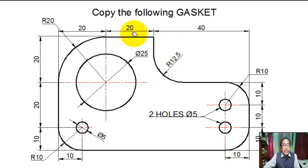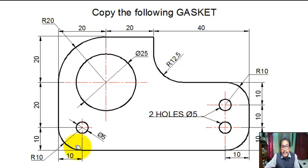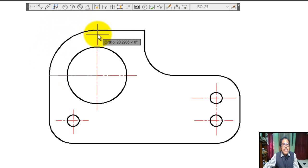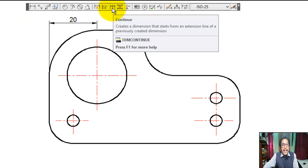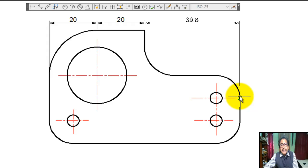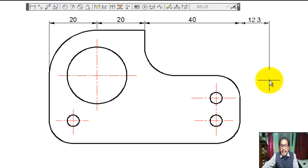Now we dimension the figure: 40, 20, 20, 20, 20, 10, 10, 10, 10. Fillet radius 20, fillet radius 10, fillet radius 10, fillet radius 12.5. Click on linear dimension in the dimension toolbar, specify dimension line location, specify second dimension line location. Click on continue dimension, specify second extension line origin twice, then press Enter.